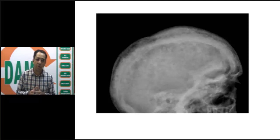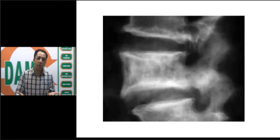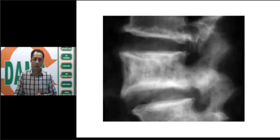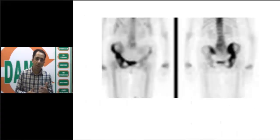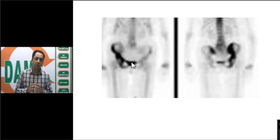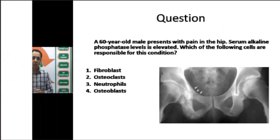Later, the skull may become elongated and deformed, called the tam o'shanter skull - named after a Scottish cap. A vertebral X-ray may also be shown, where the vertebra appears enlarged with sclerosis of the vertebral margins, classically called the picture frame vertebra. On a technetium-99m MDP bone scan or scintigraphy, there is intense increased uptake in the affected area - here seen in the right-sided pelvis. Scintigraphy is considered more sensitive than X-ray in the early phases of the disease.